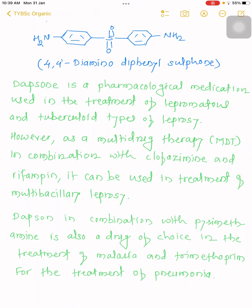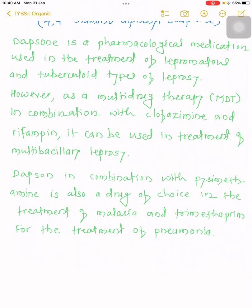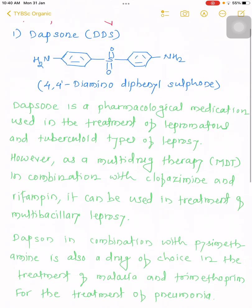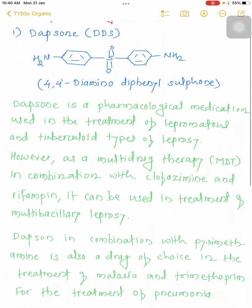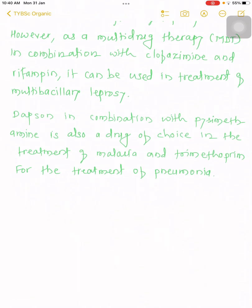In combination with clofazimine and rifampicin, dapsone can be used in the treatment of multi-bacillary leprosy as part of multi-drug therapy. Dapsone in combination with pyrimethamine is also a drug of choice for treating malaria, and with trimethoprim for the treatment of pneumonia. Now we will study how to synthesize this dapsone compound, which has two amino groups, two phenyl rings, and a sulfone group.